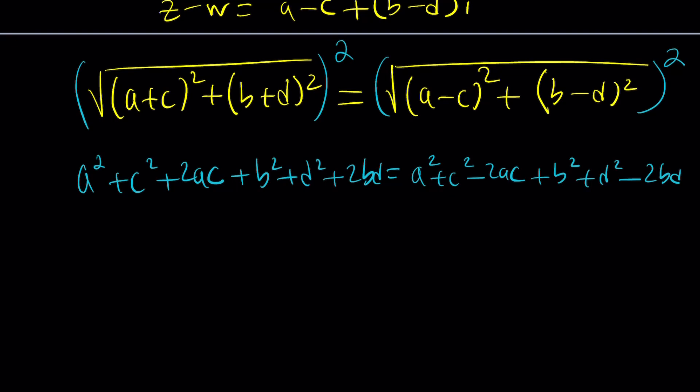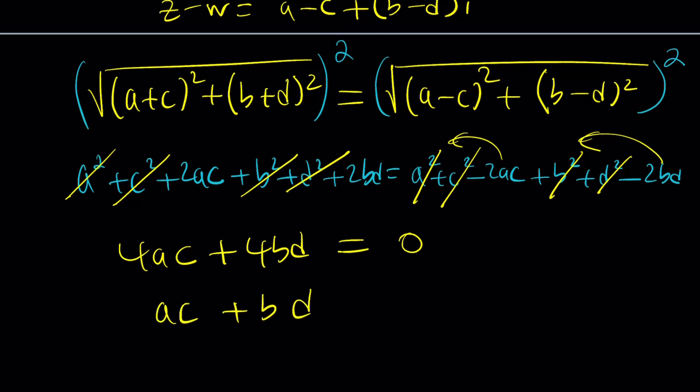Let's see what cancels out. A lot of things are supposed to cancel out. A squared, b squared, c squared, d squared, they're all going to cancel out. We're not going to have any squares. And then we have 2ac plus 2bd equals negative 2ac minus 2bd. Let's bring those to the left-hand side. 4ac plus 4bd equals 0. We can divide both sides by 4. That means ac plus bd equals 0.